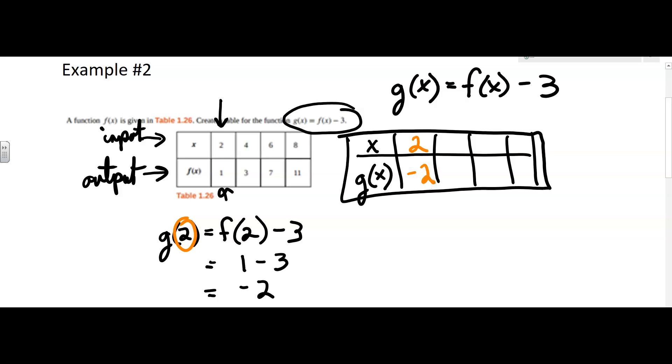Now, you don't have to rewrite each one of them. Let's look and see what happens if the input is 4. So the input is 4. Take f of 4, which is 3, and subtract 3, which gets you 0.